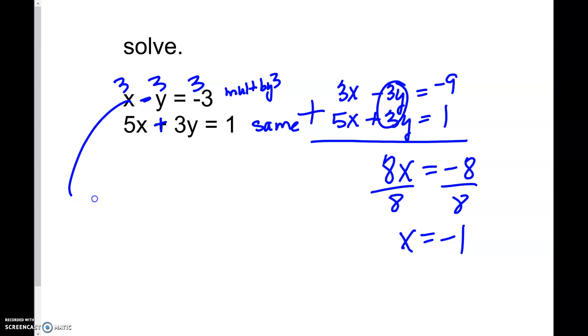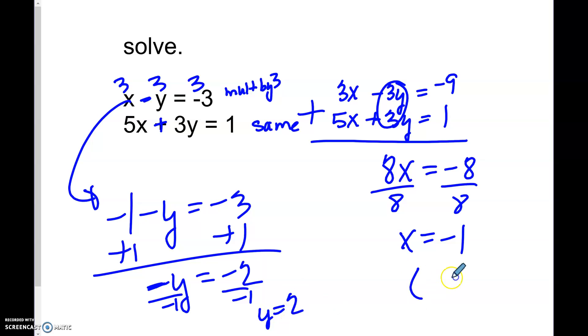Divide both sides by 8, so x is negative 1. I'm going to put that in that top equation. So negative 1 minus y equals negative 3. Add 1, add 1. So the opposite of y, negative y equals a negative 2. Well, I don't want to know what a negative y is, so I'm going to divide both sides by negative 1 and y is 2. So I get the ordered pair (-1, 2) for my solution. Nothing just got rid of right away, so I had to make sure that my y's lined up to be the same.